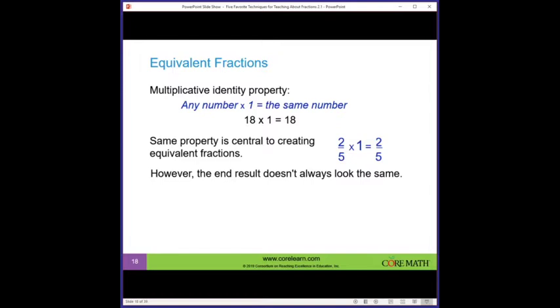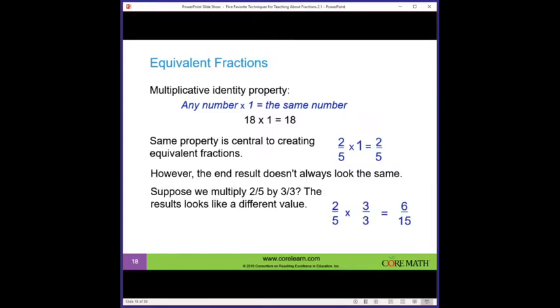Suppose we multiply two-fifths by three-thirds. The result looks like a different value. It is a different fraction, but it's not a different value. That's the difference here. And this is where we need to help students. We need to help them really focus on the concept of multiplying by one, that the value of the quantity stays the same.